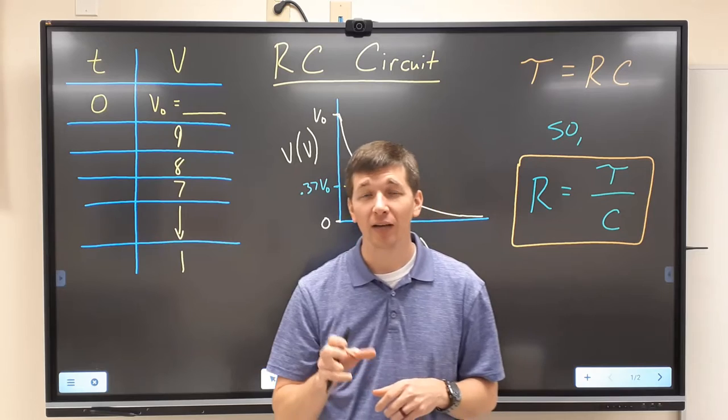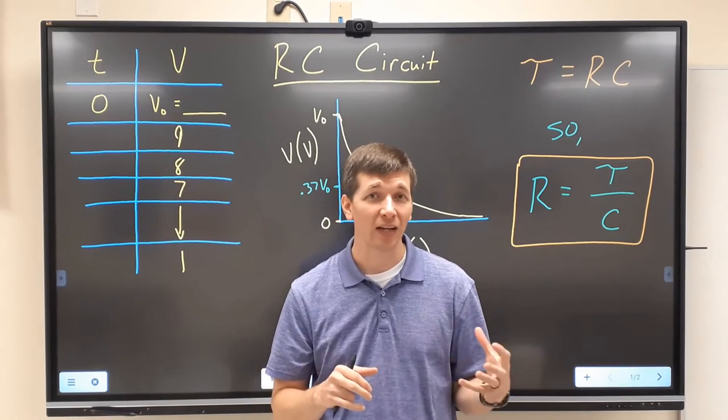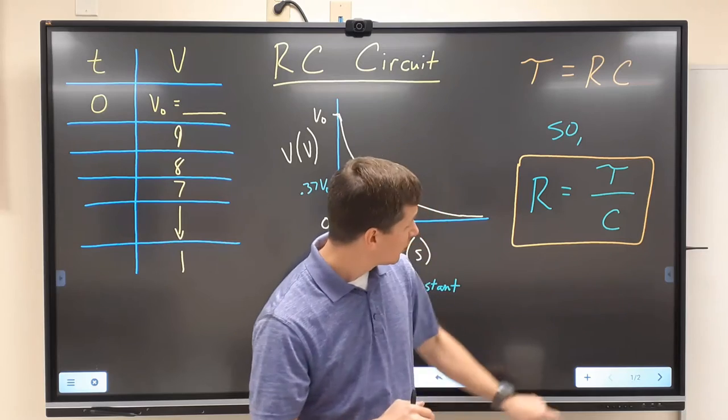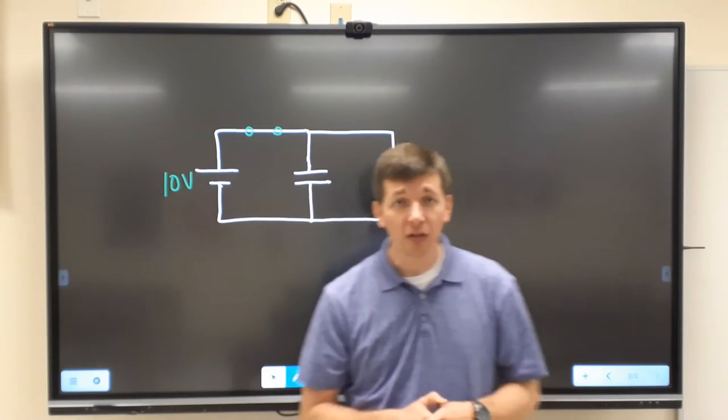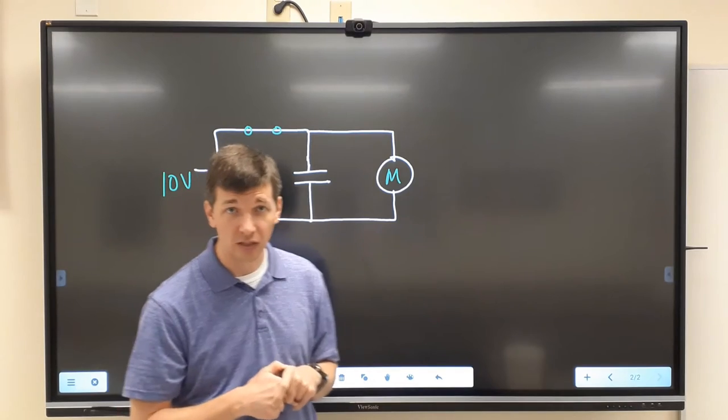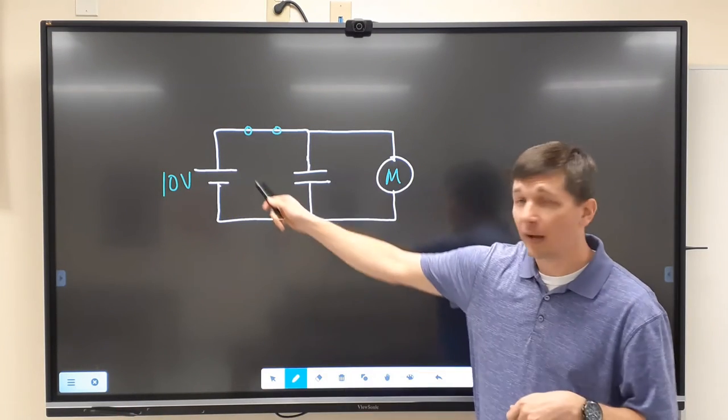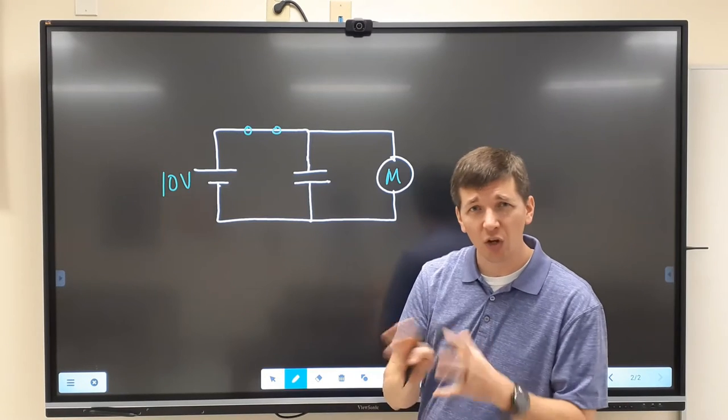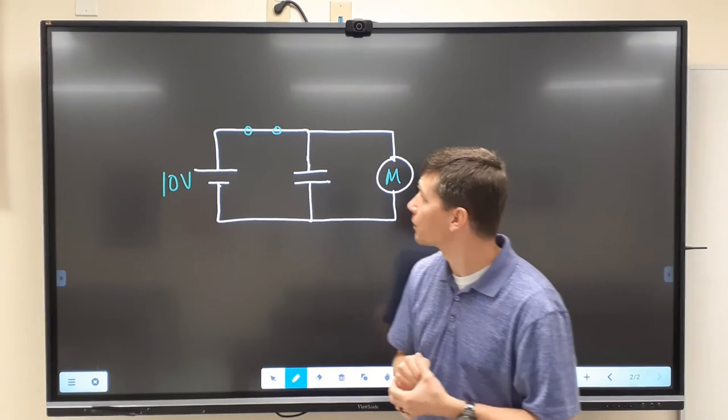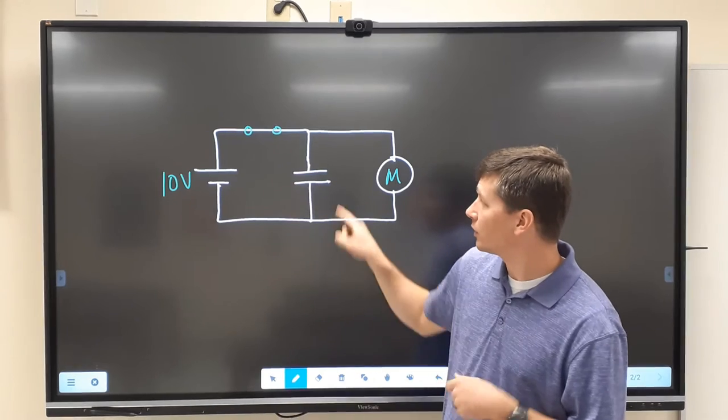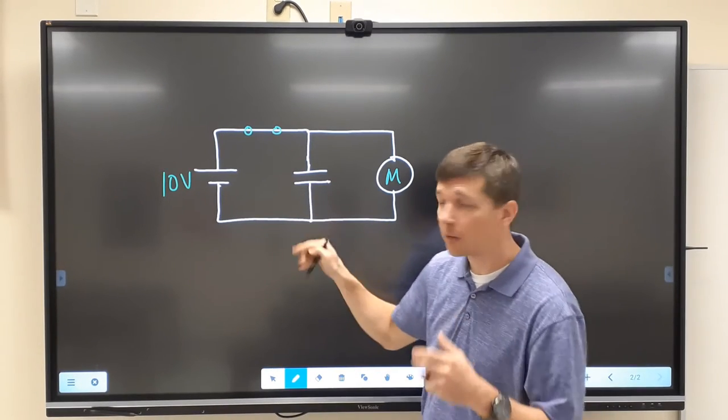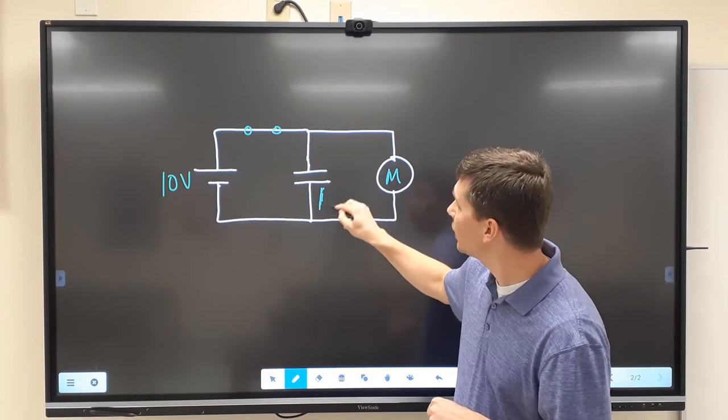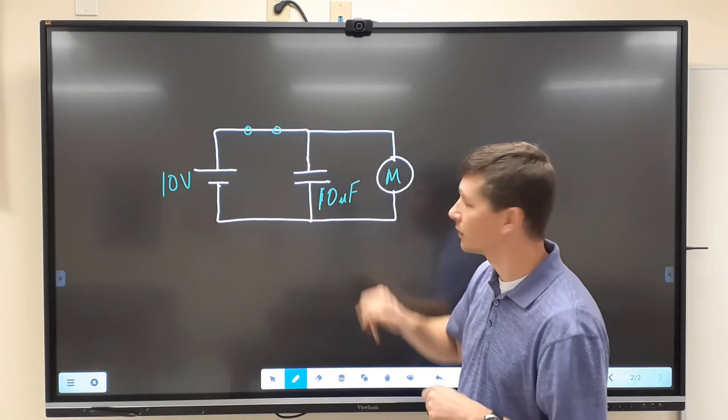RC circuit means we're going to have a resistor and a capacitor in the same circuit together. The circuit we're going to be looking at looks like this behind me. We're going to have our power supply set up to be at 10 volts or as close as we can get it to 10 volts. We've got a switch here. We've got a capacitor, a 10 microfarad capacitor for this experiment.